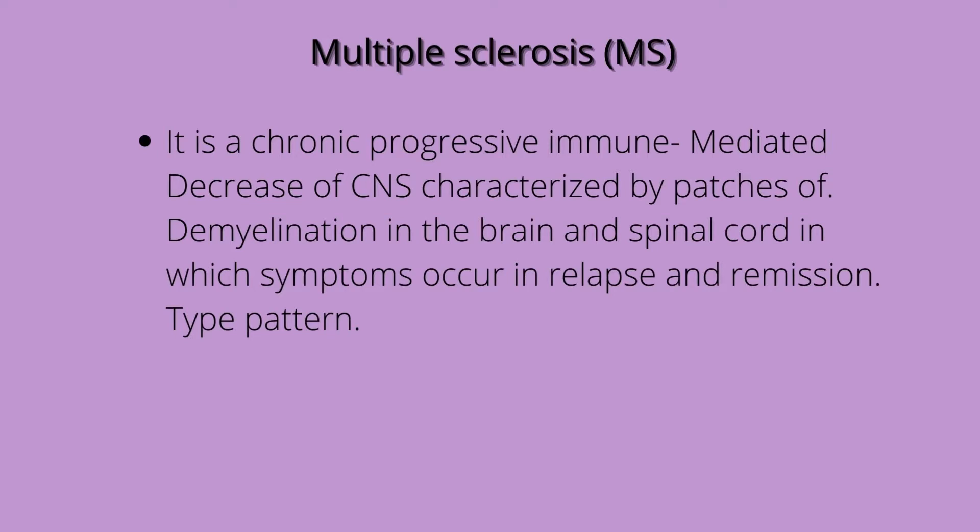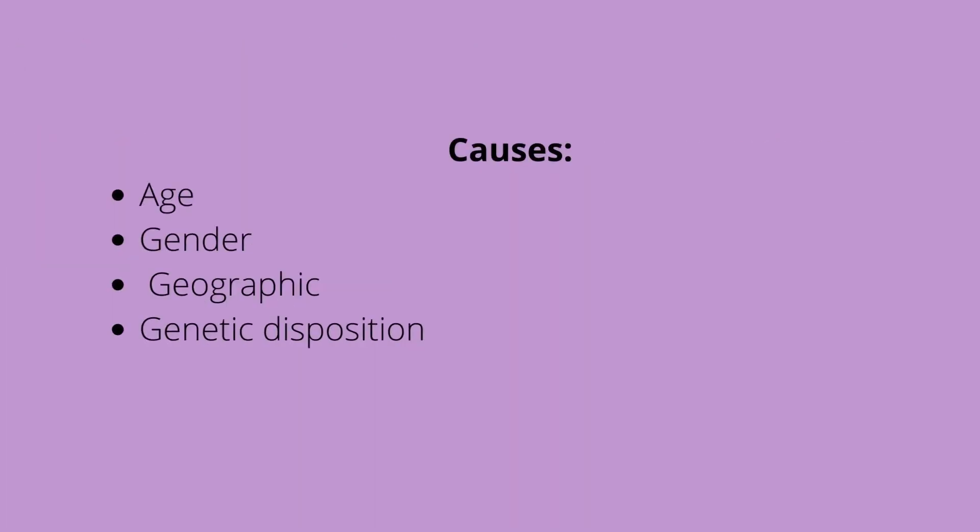MS is a chronic progressive immune-mediated disease of the CNS characterized by patches of demyelination in the brain and the spinal cord, in which symptoms occur in a relapse and remission type pattern. The exact cause of MS is unknown. Some associated causes include genetic disposition, geographical areas like Europe, New Zealand, South Australia, Northern U.S., and Southern Canada, female gender, and young adults between the ages of 20 to 40 years are most commonly affected.